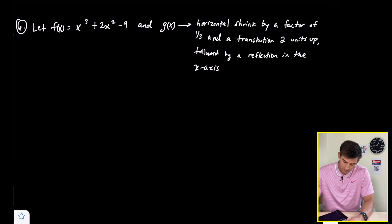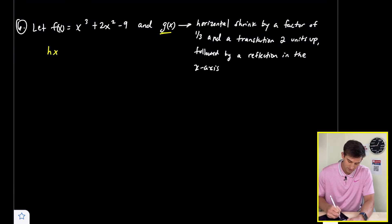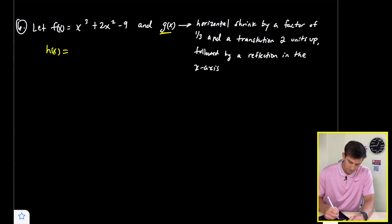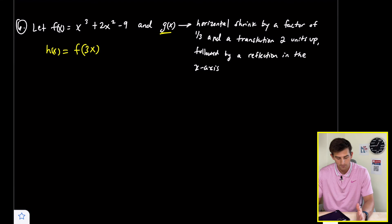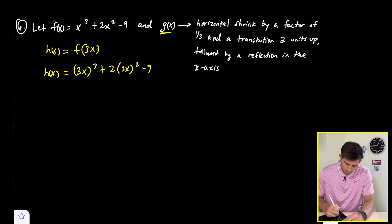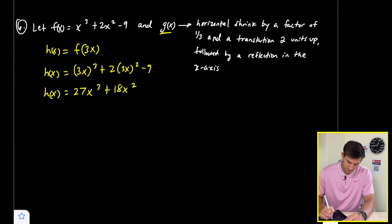For a horizontal shrink by a factor of one-third, we multiply our x values by 3, so h of x equals f of 3x. That gives h of x equals 3x cubed plus 2 times 3x squared minus nine. Simplifying: 27x cubed plus 18x squared minus nine. That handles the horizontal shrink.